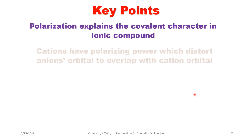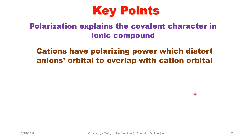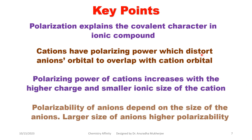These are the key points for polarization. Polarization explains the covalent character in ionic compounds. Cations have polarizing power which distorts the anion's orbital to overlap with the cation orbital. Polarizing power depends on higher charge and smaller ionic size of the cation. Polarizability of anions depends on the size of the anion — larger size means higher polarizability and more covalent character.